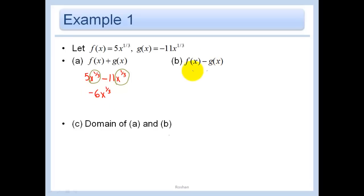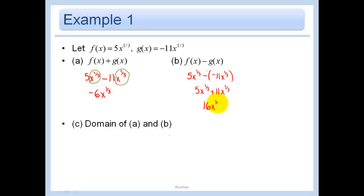Now I want to subtract them: 5x to the 1/3 minus negative 11x to the 1/3, which means add the two up. Since I have like terms, I have a total of 16x to the 1/3. It's like saying 5 apples minus negative 11 apples — you need to make sure you have like terms and combine them correctly.